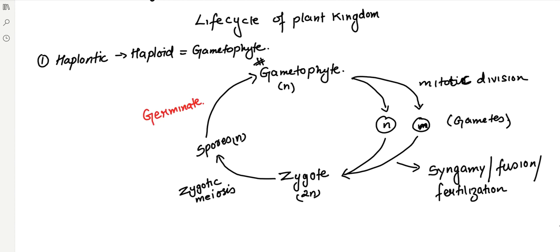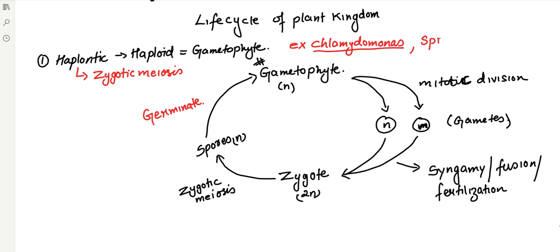Coming to the key points to remember: the haplontic life cycle will have zygotic meiosis — this is important. They can ask directly which kind of meiosis a haplontic life cycle has. They may also give examples like Chlamydomonas, Spirogyra, or Ulothrix undergoing sexual reproduction, and your answer should be that zygotic meiosis is seen in these organisms.